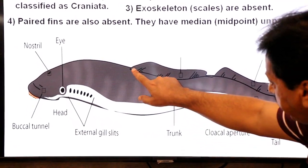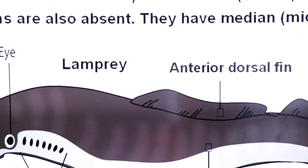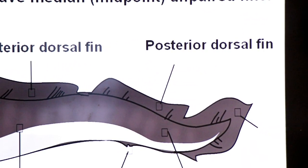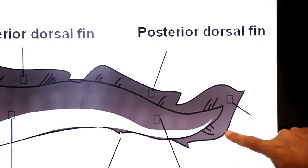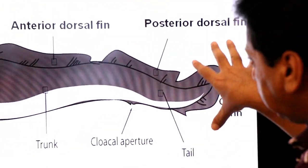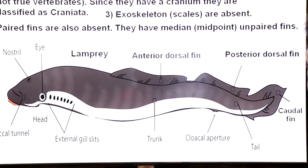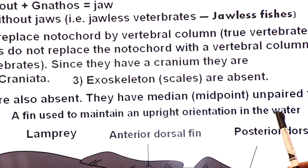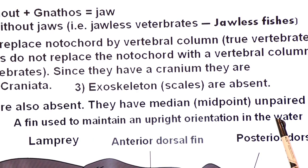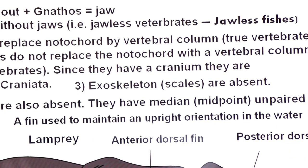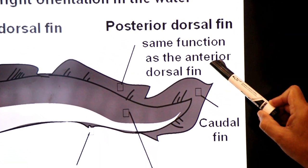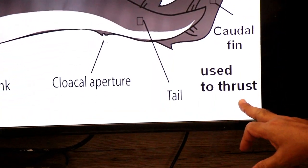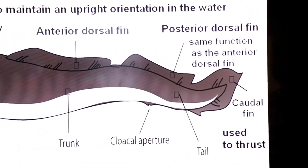Looking at the diagram of lamprey: you will see an unpaired fin called the anterior dorsal fin, and another unpaired fin called the posterior dorsal fin. There is also a caudal fin at the tail. The function of the anterior dorsal fin is to stabilize the body. The posterior dorsal fin has the same function — it also acts as a stabilizer. The caudal fin in lamprey is used to thrust, giving a sudden forceful push in a specified direction.